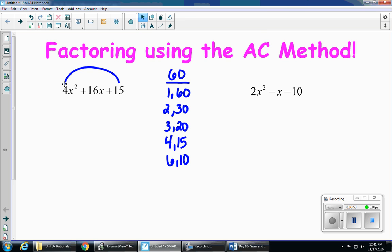So when I'm factoring using this method, the 4x squared and the 15 get brought down. And that 16x is going to get broken into two pieces. So I'm going to list out two blank spaces.